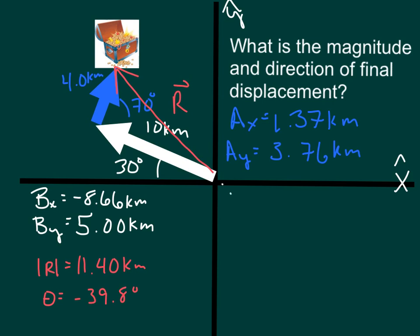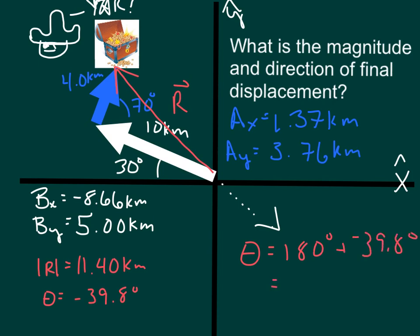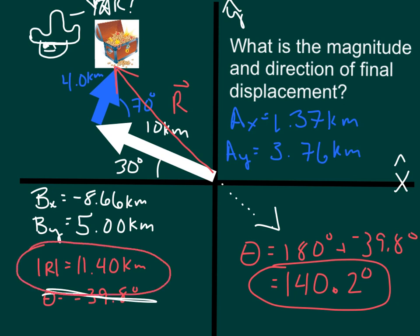Captain Mathbeard was a tricky pirate captain, knowing that when you use tangent and you're trying to find an answer that's in the second or third quadrants, you get a negative. So what you have to do, you have to say that theta equals 180 degrees plus negative 39.8 degrees, which equals 140.2 degrees. So our final direction is going to be 140.2 degrees and our final magnitude is going to be 11.4 kilometers. So 11.4 kilometers at 140.2 degrees.